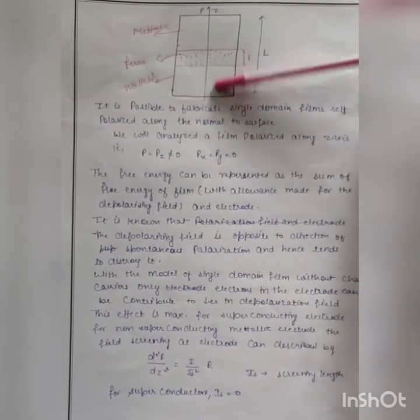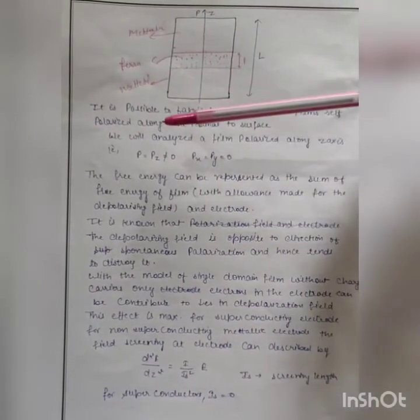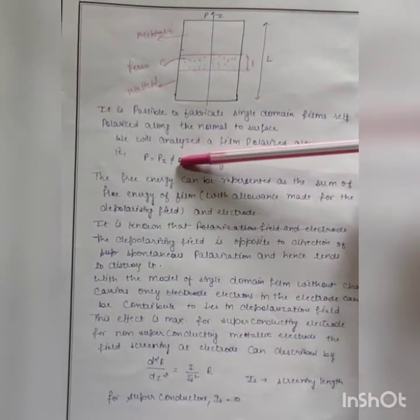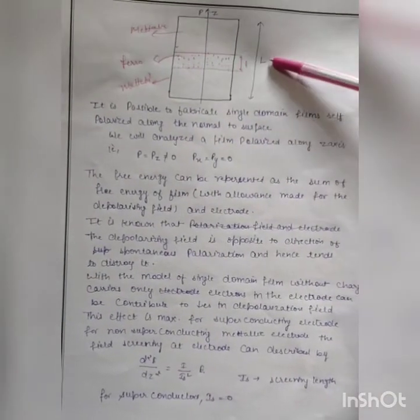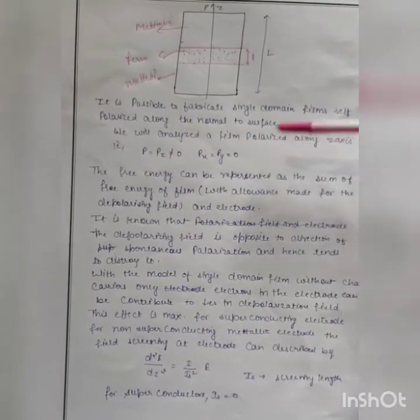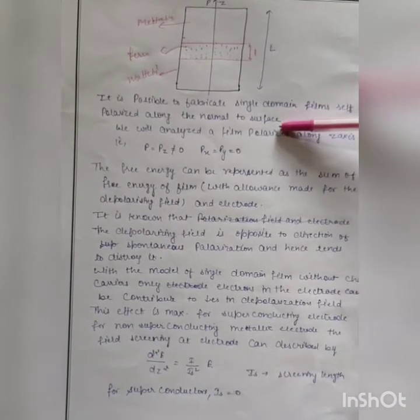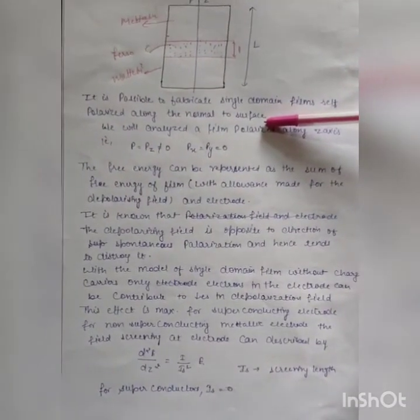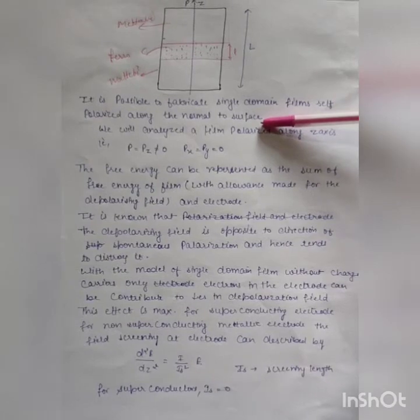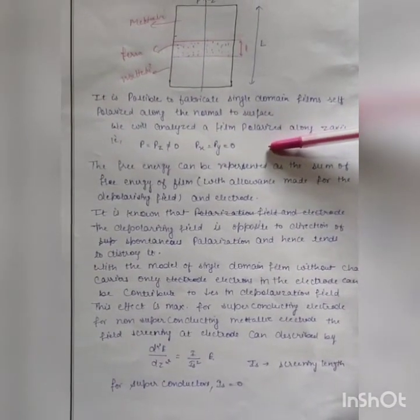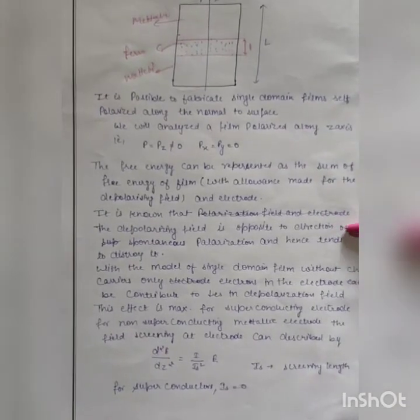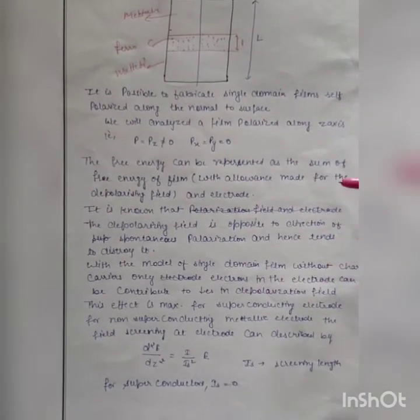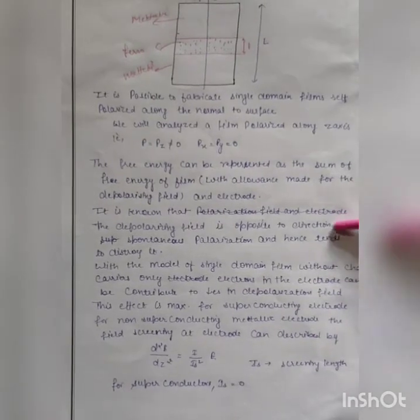The polarization field will act only along the z-axis. Let us consider this polarization as P, and in the x-direction and y-direction, this is zero. The free energy can be represented as the sum of the free energy of the film — with allowance made for the depolarization field — and the electrode contribution. The depolarization field is opposite to the direction of spontaneous polarization, and hence tends to destroy it.